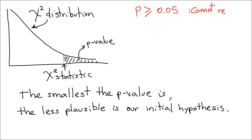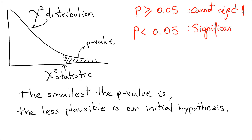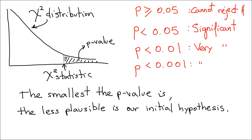The take-home message is that by comparing the observed and expected values in a sample, you can guess if your initial hypothesis is plausible or not — in our case, that hazelnuts and almonds are in the same proportion. For historical reasons, if your p-value is 0.05 or above, your initial hypothesis cannot be ruled out. If it's below 0.05, we consider that the hypothesis is wrong. The smaller the p-value, the more confident we are that the observations differ from the expectations.